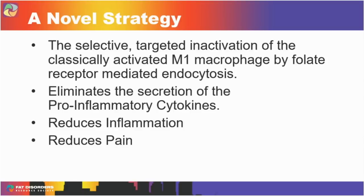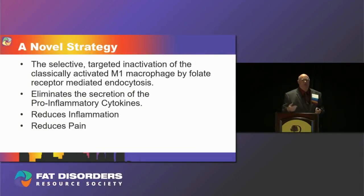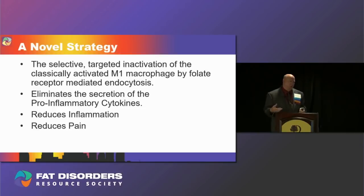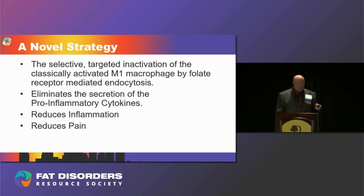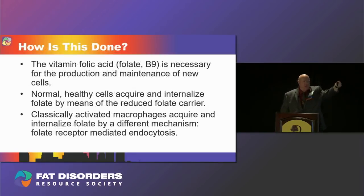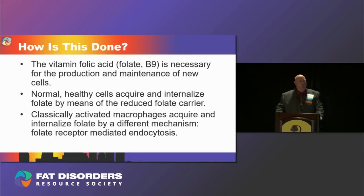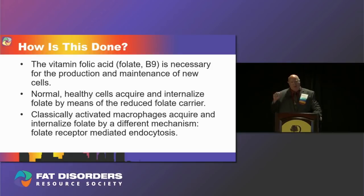The first novel strategy is the selective, targeted inactivation of M1 MACs by what is called folate receptor-mediated endocytosis. By inactivating these cells, it eliminates their secretion of pro-inflammatory cytokines, which reduces inflammation and reduces pain, because once those macrophages' contribution to cytokine production decreases, those cytokines cannot interact with the nociceptors. The vitamin folic acid — B9 — is necessary for the production and maintenance of new cells. Normal healthy cells acquire folate via the reduced folate carrier.